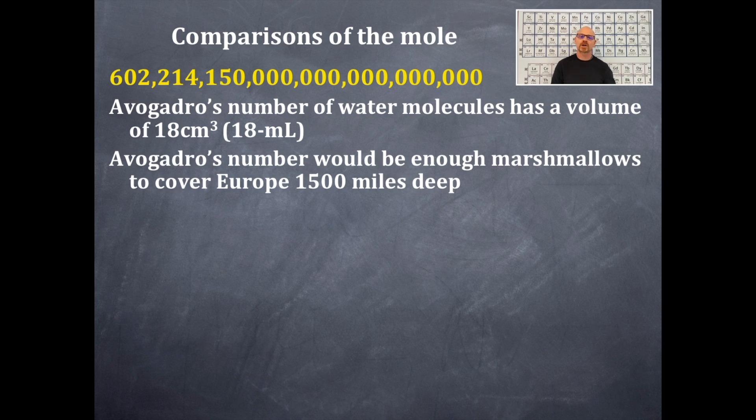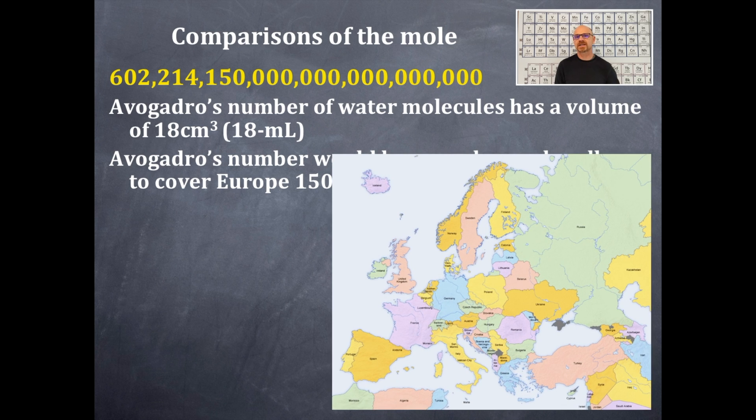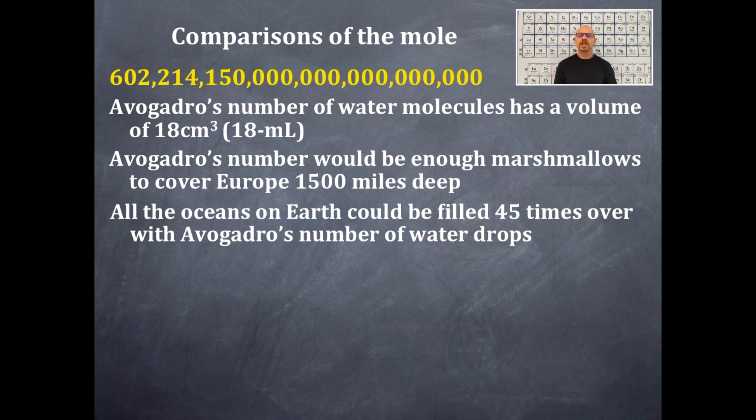Avogadro's number would be enough marshmallows to cover Europe 1,500 miles deep. There's Europe, just in case you were curious. And all the oceans on earth could be filled 45 times over with Avogadro's number of water drops. Now recall that a water drop has more than one water molecule in it. It has many water molecules in one water drop.